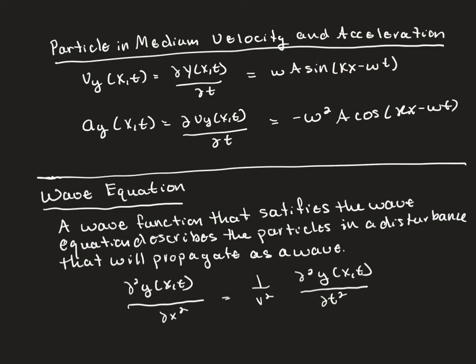Taking the partial derivative with respect to time again gives the acceleration: negative angular frequency squared times amplitude times cosine of (kx − ωt). Keep in mind that since sine and cosine oscillate between 1 and negative 1, they constrain what fraction of your max value you're at at any moment. Whatever is in front of the trig function is your maximum value — it goes from max to zero, to negative max, back to zero, back to positive max.